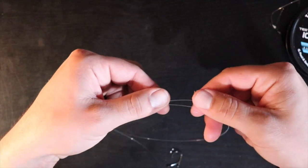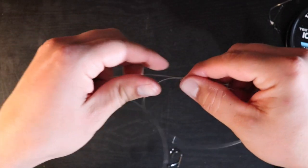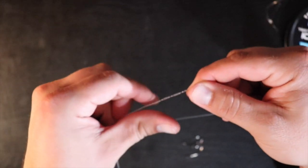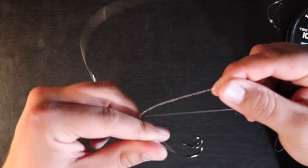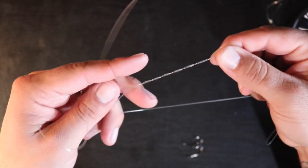Make you another loop just like so, and now we're going to take the opposite end and run it over. Again, five, six times. Once you do this a few times, you kind of get the hang of it.